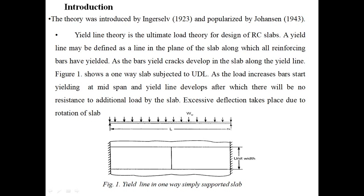There is no additional load required to bend the slab further. Due to the bending pattern, it will bend and excessive deflection takes place due to rotation of the slab. Due to this crack, the single segment of the slab is divided into two segments and it tends to rotate against this axis. That crack is nothing but the yield line — this is the yield line for a one-way slab, developed at the center.